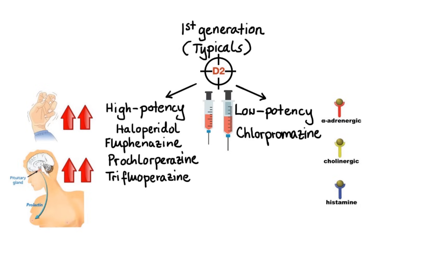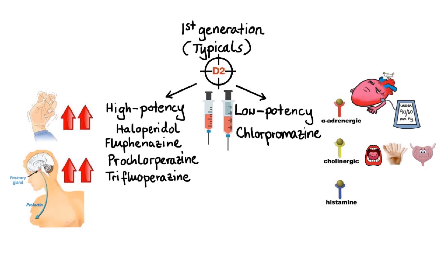For example, blockade of alpha-adrenergic receptors can lead to orthostatic hypotension. Blockade of muscarinic receptors can lead to anticholinergic symptoms such as dry mouth, blurred vision, difficulty urinating, and constipation. And blockade of H1 histamine receptors can lead to sedation and some weight gain.